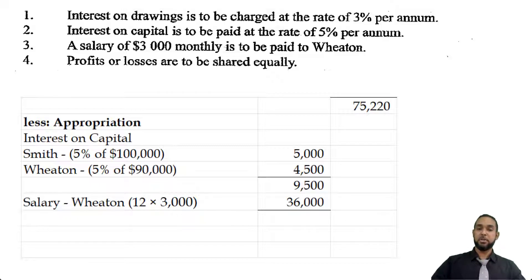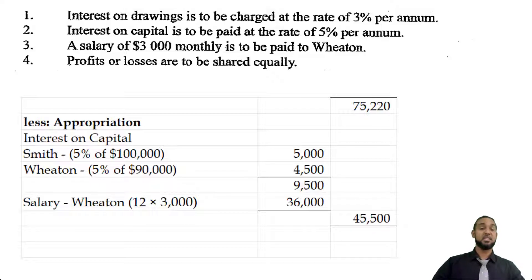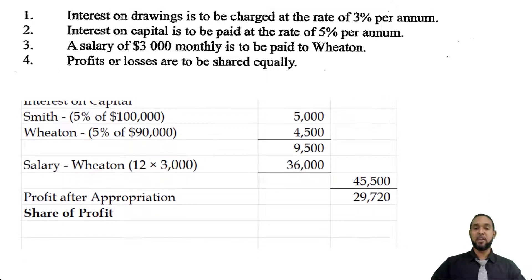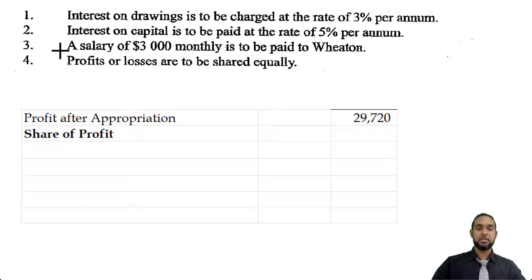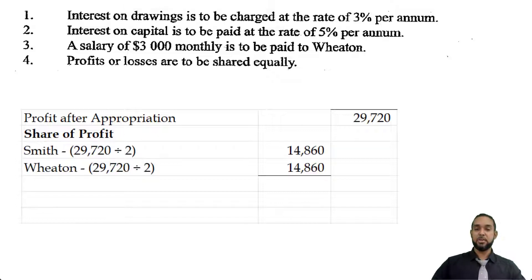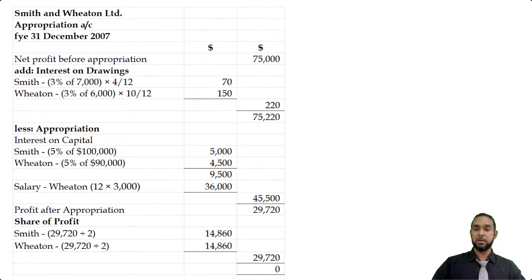Those are the only two appropriations. Totalling them gives $45,550, which we subtract from $75,220, leaving a profit after appropriation of $29,720 to be shared. The question said profits or losses are to be shared equally, so we divide $29,720 by two. Each partner gets an equal share, and when you add it up you get back exactly what was shared, leaving nothing in the appropriation account.